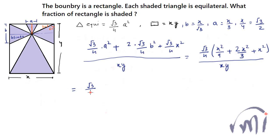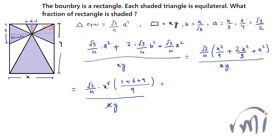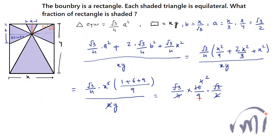This gives (√3/4)·x²·[(1/9) + (6/9) + (9/9)] / xy. The LCM is 9, giving 1 + 6 + 9 = 16 over 9. The x cancels, leaving (√3/4)·(16/9)·(x/y). Substituting x/y = √3/2: (√3/4)·(16/9)·(√3/2) = (3·16)/(4·9·2) = 48/72 = 2/3. So the fraction of the rectangle that is shaded is 2/3.